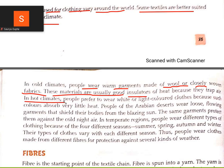In hot climates, people prefer to wear light-colored clothes because such colors absorb less heat. Therefore, the people of the Arab desert wear loose flowing garments.